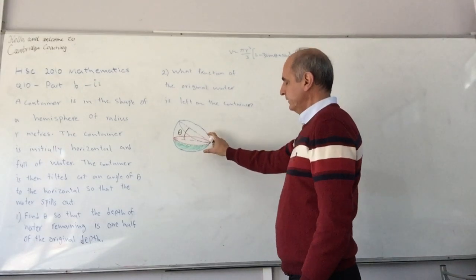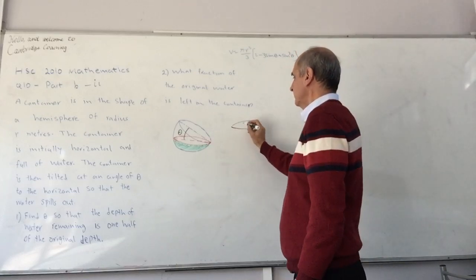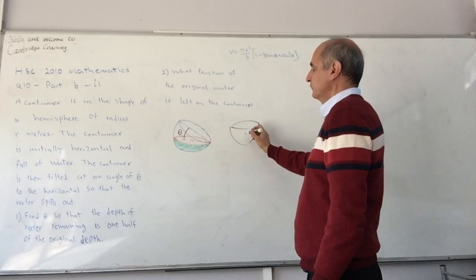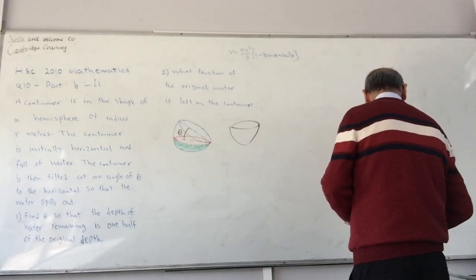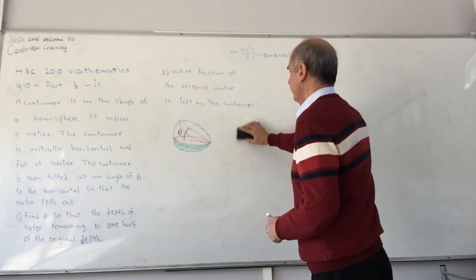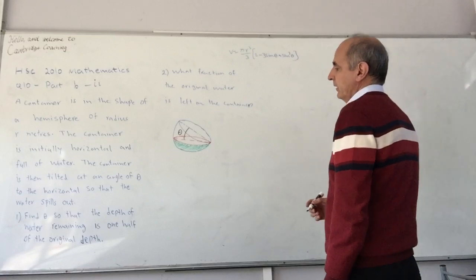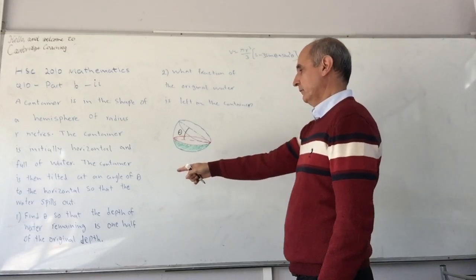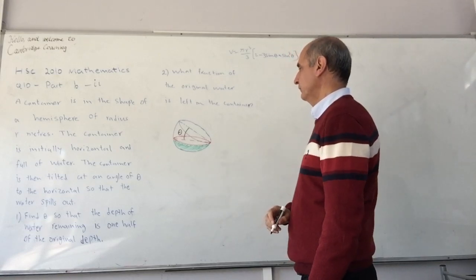So that originally was sitting like that and then we tilted, it was full of water, we tilted to this position so some of the water has been spilled out. Now they are asking what should theta be so that the depth of the water is half of the original.